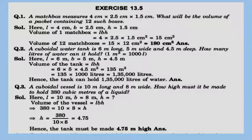Next: a cuboidal water tank is 6 m long, 5 m wide, and 4.5 m deep. How many liters of water can it hold? Remember, 1 m³ equals 1000 liters. Find the volume of the tank and then multiply by 1000 to get the capacity in liters. The answer is 1,35,000 liters.